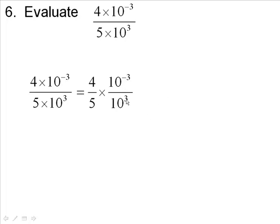And this 3 is going to move up to the top as a minus 3. So you're going to have 4 fifths because 0.8, and you had 10 to the minus 3. And this 10 cubed moves up to the top as a 10 to the minus 3. So you have minus 3 and minus 3. Okay, now if you have minus 3 and minus 3, what do you get? Minus 6. So you have 0.8 times 10 to the minus 6.